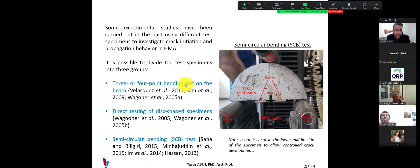The second is direct testing of disc shaped specimens, used especially in metallic materials. And the last part is semi-circular bending SCB test in flexible asphalt layer. You can see here the specimens, the support roller and CMOD gauge. CMOD gauge is crack mouth opening displacement data in the specimens for deflection measurement. And here is a notch. A notch is cut in the lower middle side at the bottom of the specimen to allow controlled crack development.